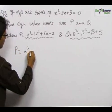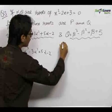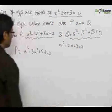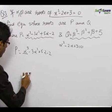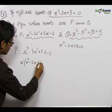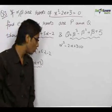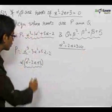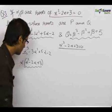p is given to be α³ - 3α² + 5α - 2, and we know that α² - 2α + 3 = 0, since alpha is a root of the quadratic equation. Now we try to reduce this cubic term. We can write the cubic term as α(α² - 2α + 3). The trick behind this question is to create the factor (α² - 2α + 3), because we know its value is 0. We try to convert all cubic and square terms into this factor.